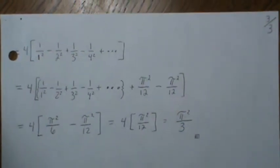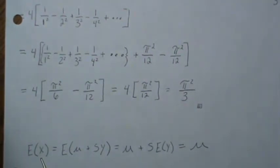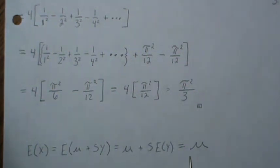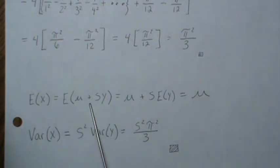So if we look at the expected value of X, plug in our transform variable. Expectation goes in, we get μ and then s times the expected value of Y, but that was 0, so we're left with μ. And here, the variance of X: we plug in this, the constant goes away, and the s comes out as a squared. The variance of Y was π²/3, so it's s²π²/3, and that's what we set out to prove.